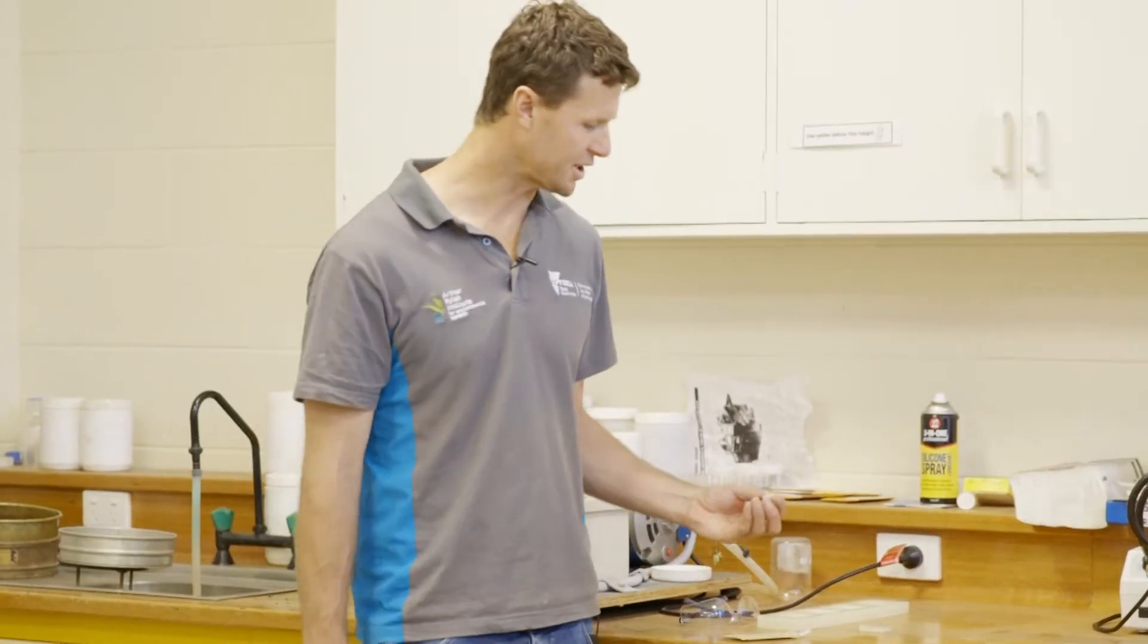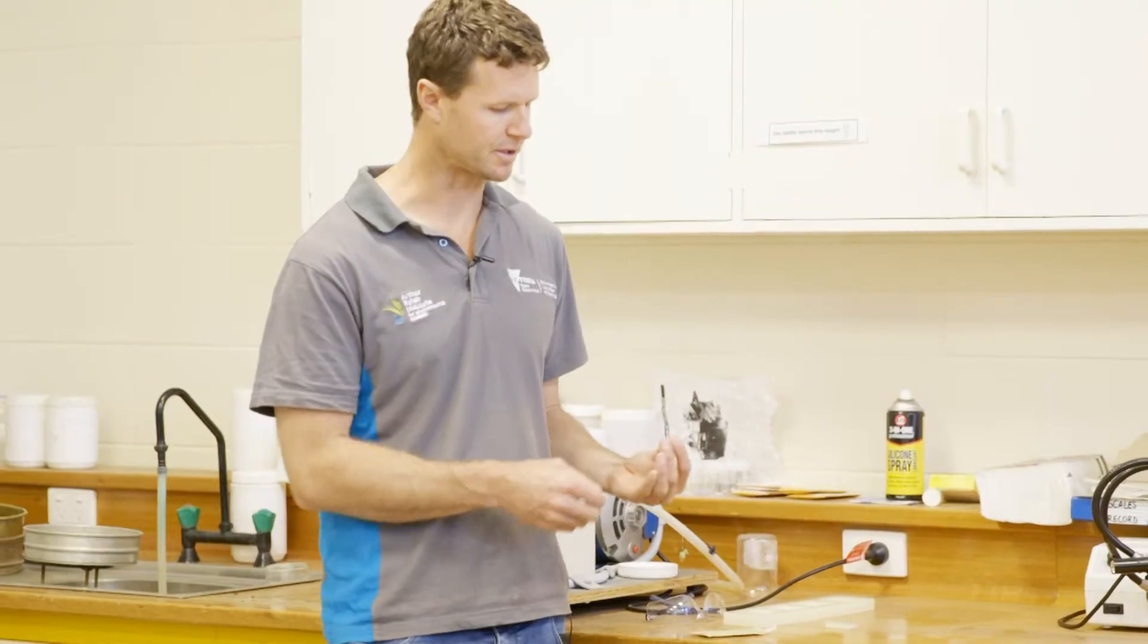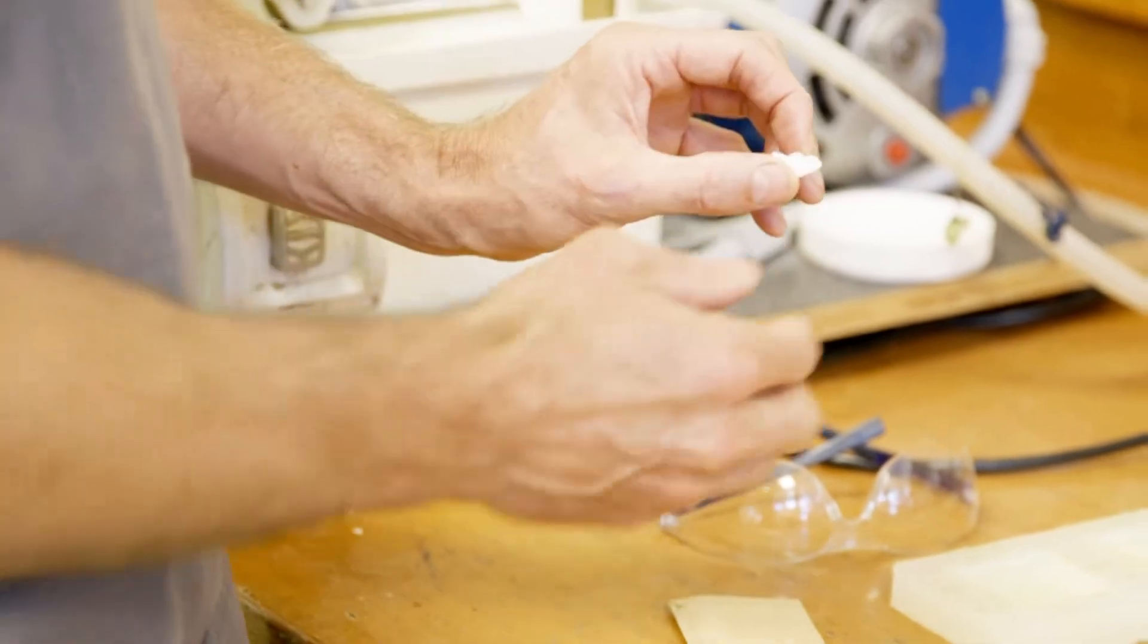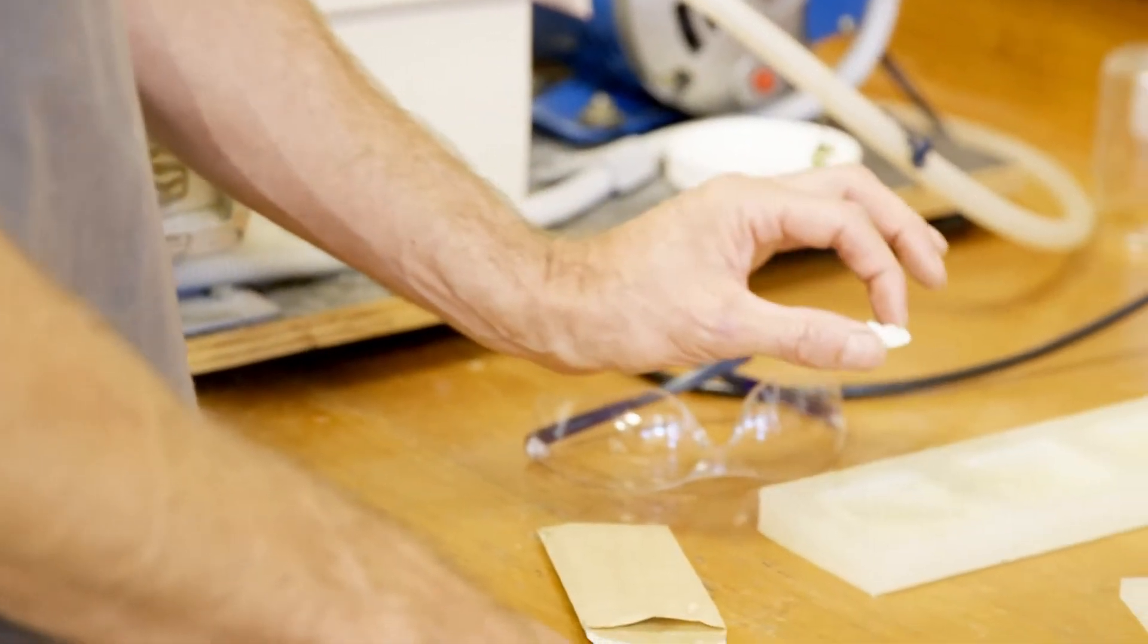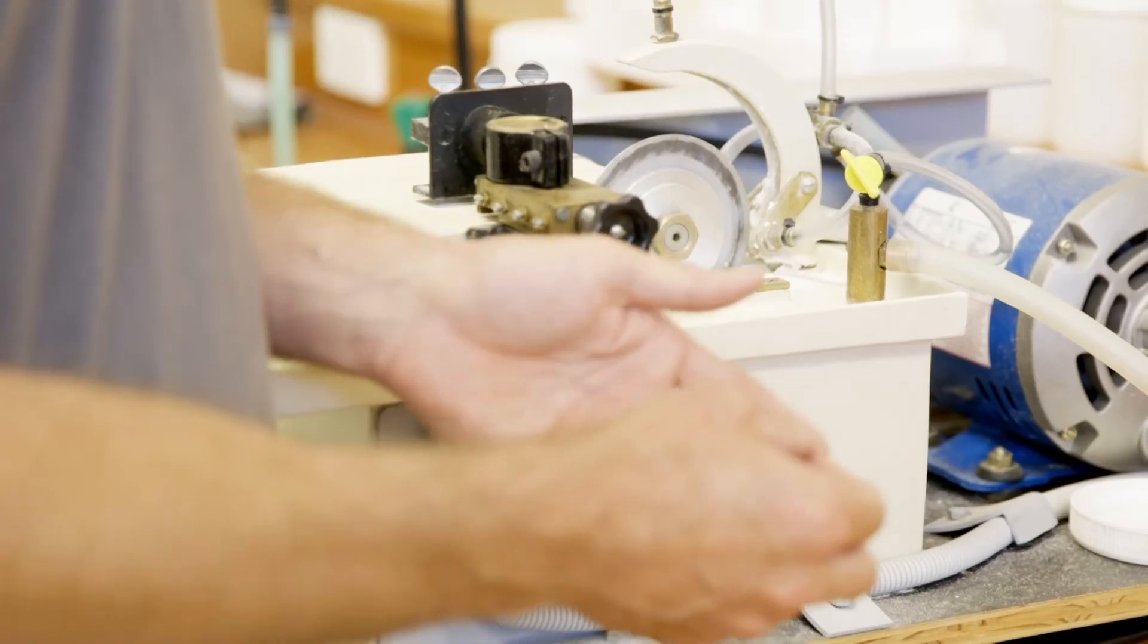When otoliths are brought back here to the lab we need to section them so we can get all our measurements out of them. For otoliths this size we take what's called a transverse section, so I cut across it. To do that we mount the otolith in resin, it sets hard, and then we take a cut using this gem master saw and we take a transverse section that's less than a tenth of a millimeter.